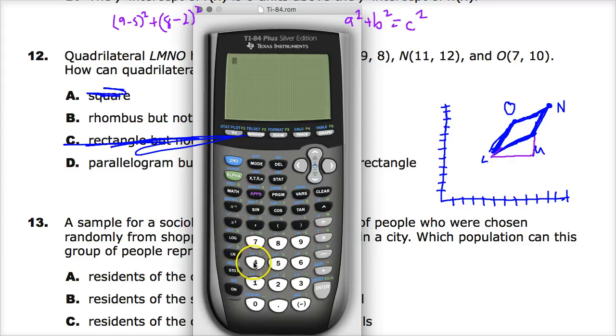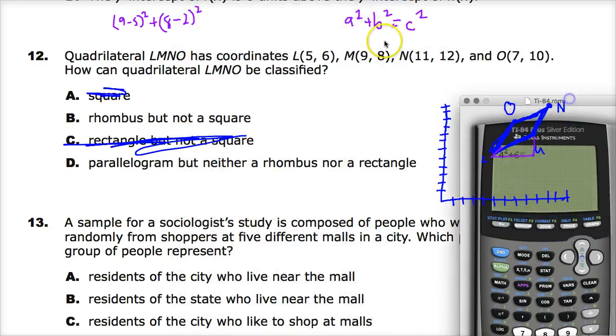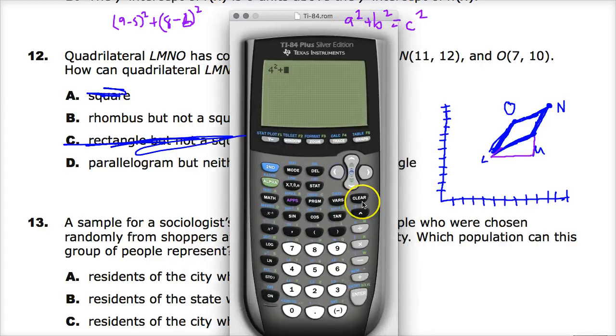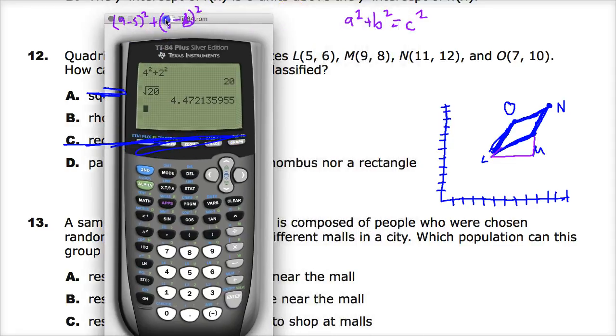So 9 minus 5 is, of course, 4 plus 8 minus 6 is 2. I was thinking ahead here when I was doing this one. This is a 2 that I'm putting in. 4 squared plus 2 squared. Square root of 20. And then I would just do the rest of them the same way.